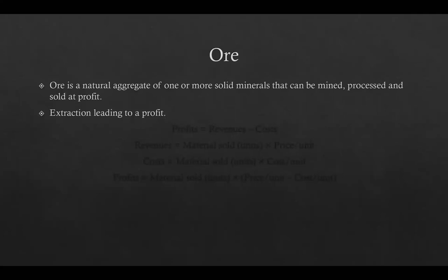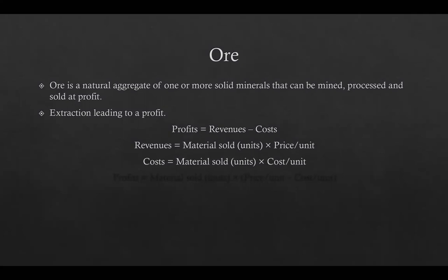For engineers, profits can be expressed in simple equation form: profit equals revenues minus cost. The revenues can be calculated by multiplying the units of material sold by the price of each unit. Similarly, cost can be calculated by multiplying the units of material sold by the cost of each unit. Combining these equations gives: profit equals units of material sold multiplied by the difference of price and cost per unit.